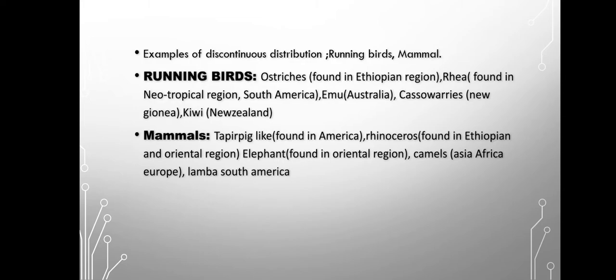If we look at mammals, you can take the example of the tapir, which is a kind of pig. The tapir is found in America. If you look at the rhinoceros, it can be observed in the Ethiopian or Oriental region. Elephants are present in the Oriental region. And camels can be observed in Asia, Africa, and Europe.